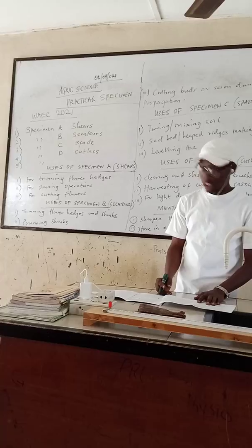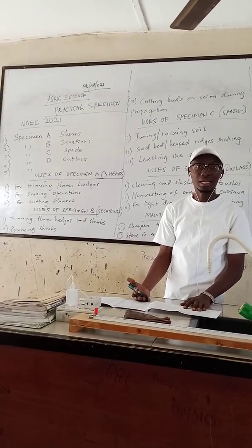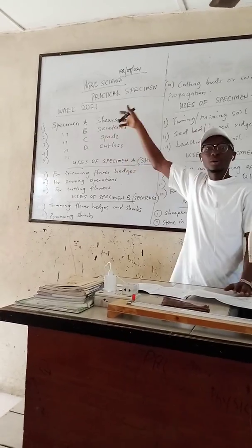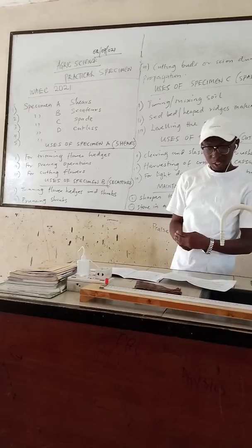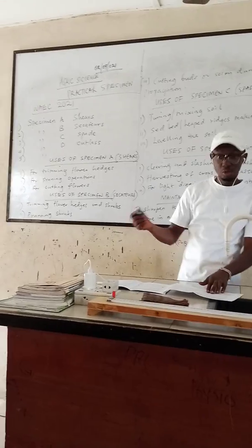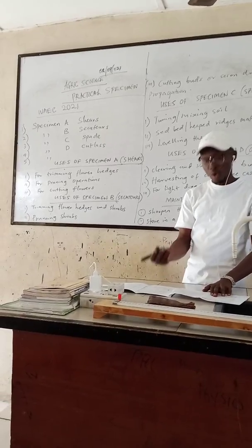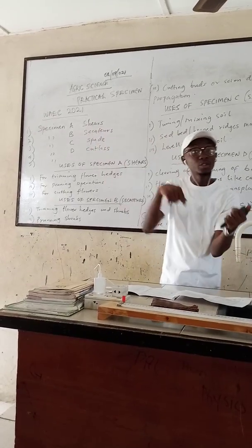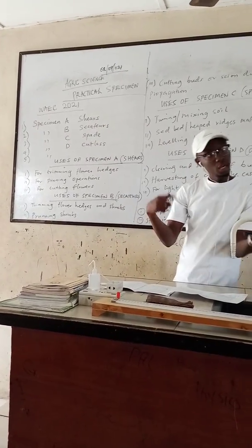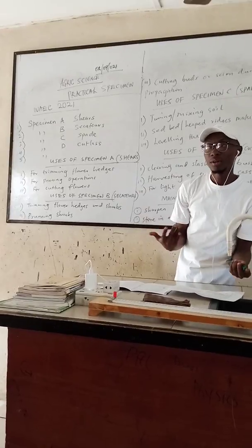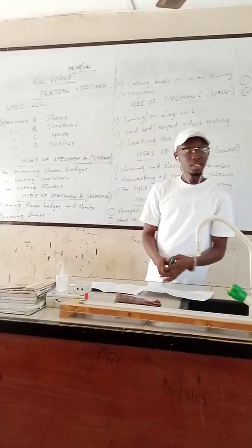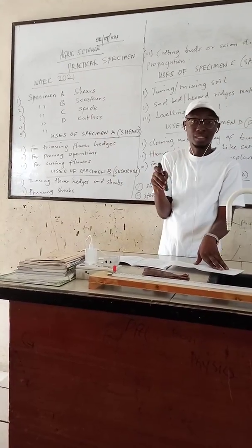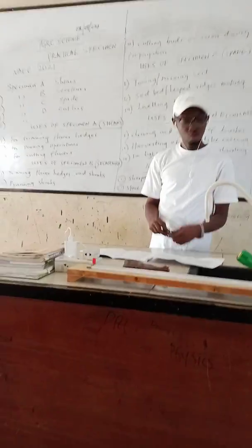For Specimen A, which is the shears, we can use secateurs as a replacement. If we don't have the shears, we can use secateurs in replacement. For Specimen B, we can also use shears, a sickle, a saw, and a cutlass. For Specimen C, even if there is no spade, we can use a shovel, a hoe, or a trowel. For Specimen D, we can use a hoe in place of the cutlass, especially when people are harvesting. We can also use a machete.